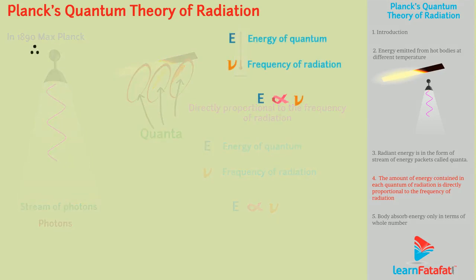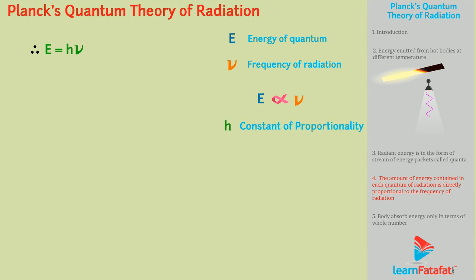Therefore, E equals h nu, where h is the constant of proportionality called Planck's constant, whose value is 6.625 into 10 to the power minus 34 joule second. As nu equals c by lambda, the energy of quantum can also be expressed as E equals h into c by lambda.